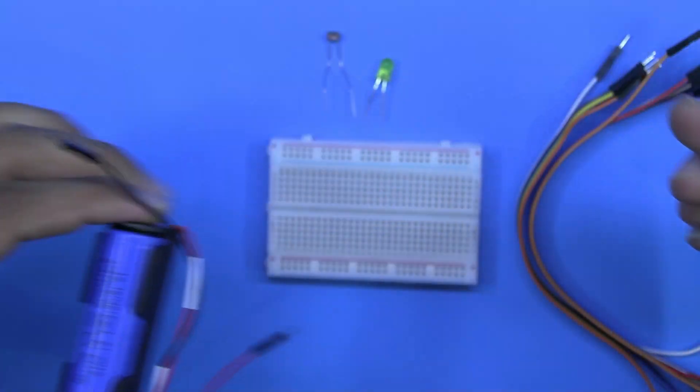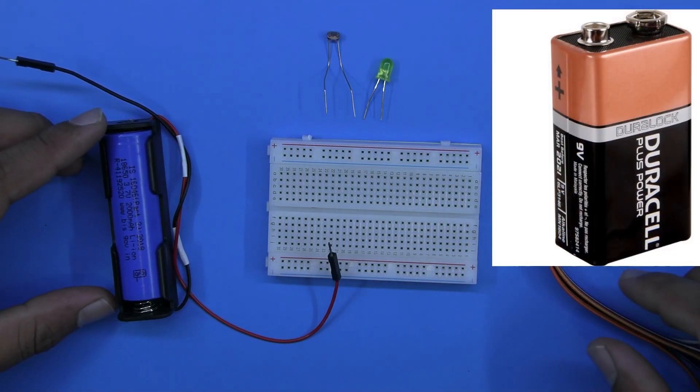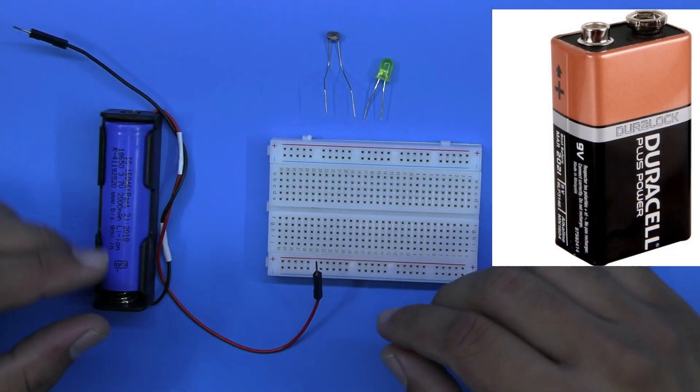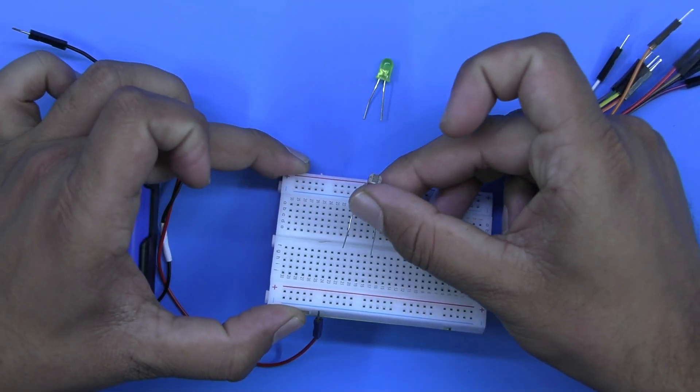I use a 3.7 volt lithium battery here, but if you have a 9 volt battery you can use it. Just make sure to use a resistor to avoid any damage to the LED and sensor.